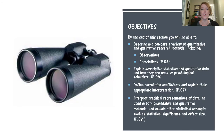In today's lesson, we are going to talk about a variety of quantitative and qualitative research methods, including observations and correlations. We're going to discuss what descriptive statistics and qualitative data are and how they are used by psychological scientists in research. We will be defining correlation coefficients and explain their appropriate interpretations. And we're going to be looking at graphical representations of data, which are used in both quantitative and qualitative methods. We're also going to be explaining other statistical concepts like statistical significance and effect size. If you haven't done so already, go ahead and grab your notes and get ready.